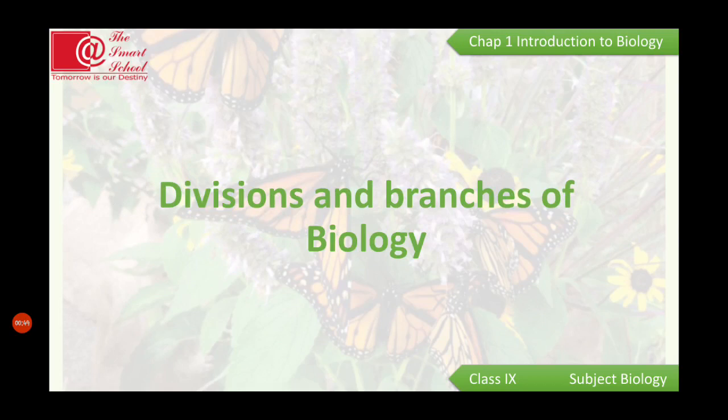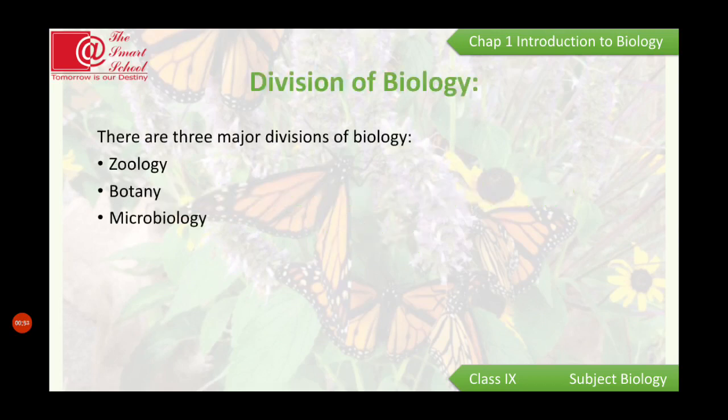Divisions and branches of biology. There are three major divisions of biology: Number 1, Zoology; Number 2, Botany; and Number 3, Microbiology.